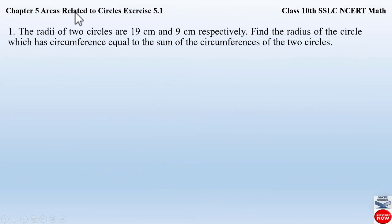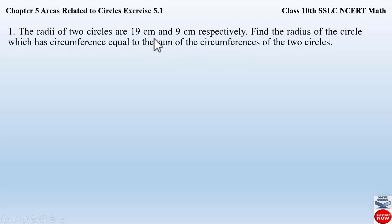Question number one from exercise 5.1, chapter 5, areas related to circles says: the radii of two circles are 19 centimeters and 9 centimeters respectively. Find the radius of the circle which has circumference equal to the sum of the circumferences of the two circles. So here they have given us the radii of two circles, that is 19 and 9 centimeters, and we have to find the radius of another circle whose circumference equals the sum of those two.